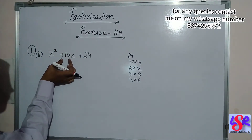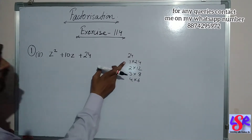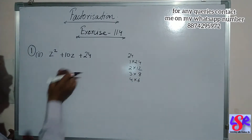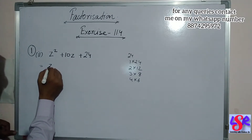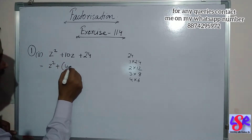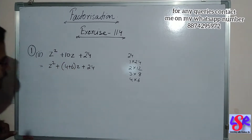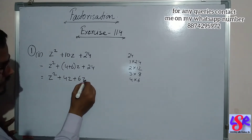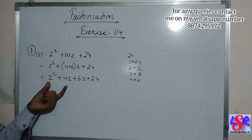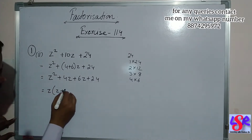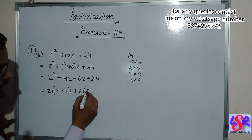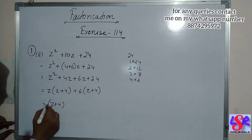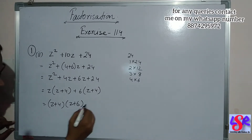Now we'll see how we get plus 10 by adding any of the two sets: 1 and 24, 2 and 12, 3 and 8, and 6 and 4. So here we can see 6 and 4 are added to get 10. So we write this as z square plus 4z plus 6z plus 24. Taking z common from the first two gives z plus 4, and taking 6 common from the last two also gives z plus 4. So taking z plus 4 as common, the answer is z plus 4 into z plus 6.